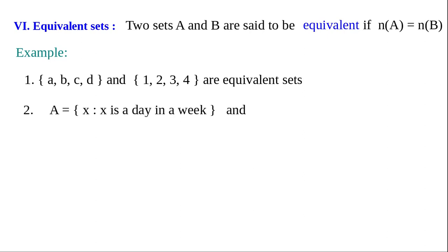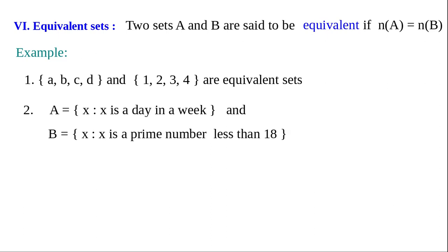Example one: {a, b, c, d} and {1, 2, 3, 4} are equivalent sets because their number of elements is the same. Another example: A equals the set of days in a week — Monday through Sunday, 7 days. B equals the set of prime numbers less than 18, which are 2, 3, 5, 7, 11, 13, and 17 — also 7 elements. Therefore A and B are equivalent sets.